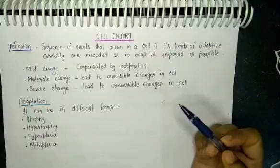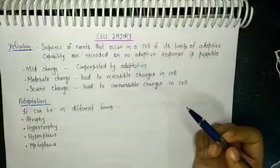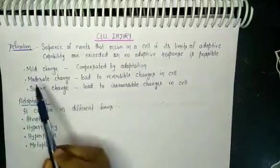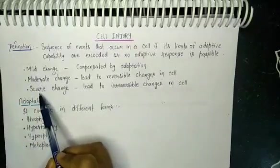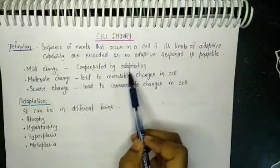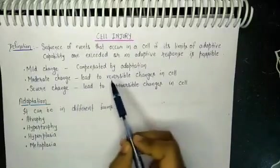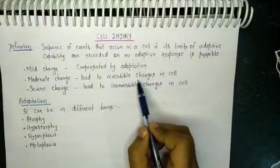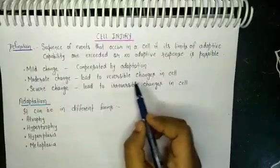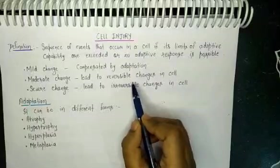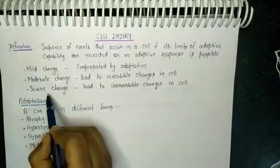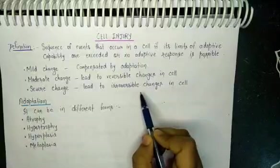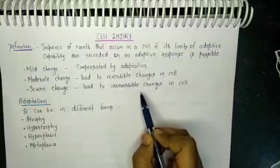When a cell undergoes adverse environmental conditions, there will be a sequence of changes observed in the cell. There can be three types of changes: mild, moderate, or severe. Mild changes can be compensated by adaptation. Moderate changes can be compensated or lead to reversible changes, meaning the cell still has the capability to regain its normal properties. Severe changes lead to irreversible changes — the cell loses all its properties and will never regain them.